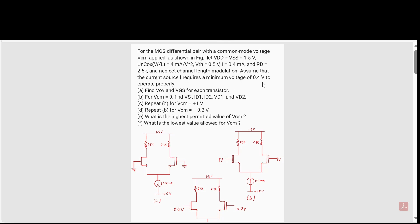The current source is 0.4 milliamperes, RD is 2.5 kilo-ohms. Channel length modulation is neglected. The current source requires a minimum voltage of 0.4 volts to operate properly. They are asking us to find the overdrive voltage and VGS for each transistor, so we will calculate each voltage and current.